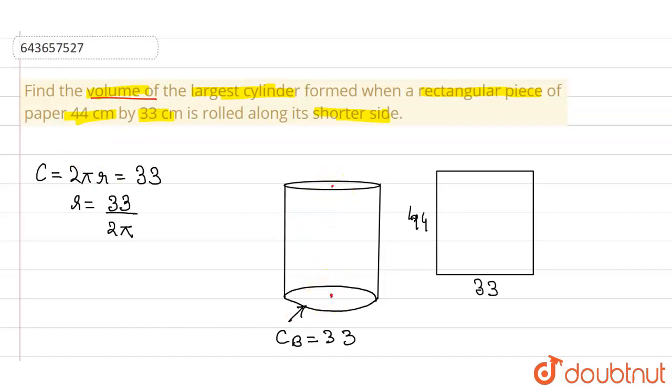Now height of the cylinder, height of the cylinder should be 44 centimeter. This length of the rectangle will form the height of the cylinder.